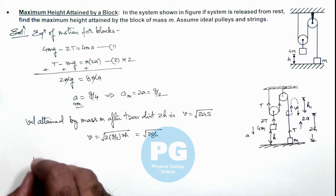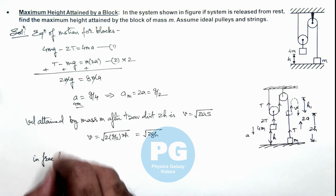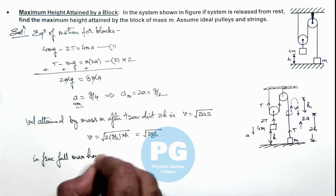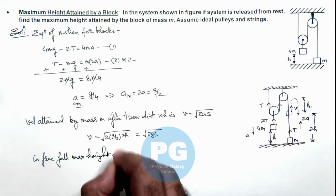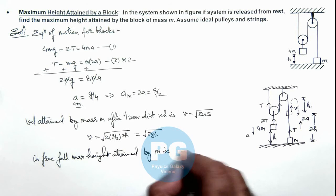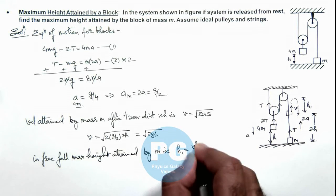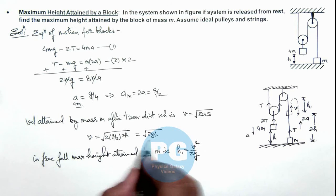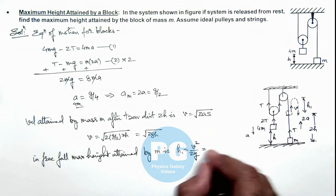In free fall, the maximum height attained by m is h1, which can be written as v squared by 2g. If we substitute the value of v, which is root 2gh, this will be h.